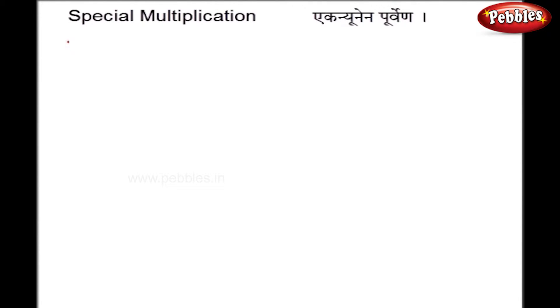Let me show you a special multiplication which is based on the sutra Ek Nuneena Purvena. This sutra is used where we have to multiply by 9 or multiples of 9. Multiples of 9 does not mean the table of 9, but it means 9, 99, 999 and so on.